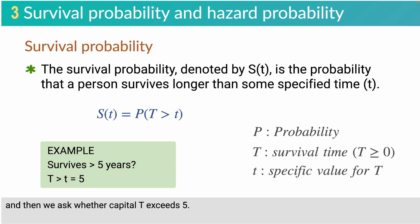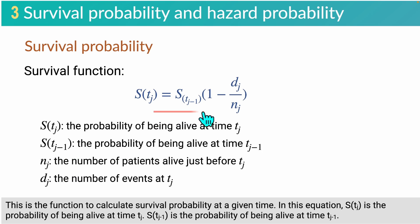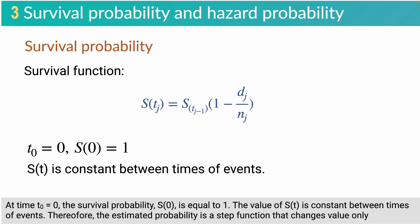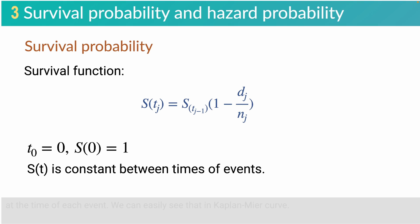We then ask whether capital T exceeds 5. This is the function to calculate survival probability at a given time. In this equation, S(T_j) is the probability of being alive at time T_j. S(T_{j-1}) is the probability of being alive at time T_{j-1}. N_j is the number of patients alive just before T_j, and D_j is the number of events at time T_j. At time T_0 equals 0, the survival probability S(0) equals 1. The value of S(T) is constant between times of events. Therefore, the estimated probability is a step function that changes value only at the time of each event, as we can easily see in the Kaplan-Meier curve.